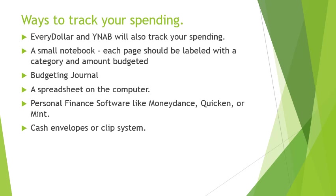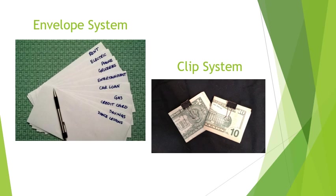There's also a cash envelope or clip system. The envelope system uses paper envelopes, or in our case a coupon organizer — a plastic envelope with sections, each section being a different category. We use a cash system for things we know we're going to potentially overspend on, where we really need that visual reminder of how much we have to spend and how much we have left.